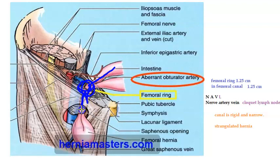The femoral hernia passes through the femoral ring, then through the femoral canal, and comes out through the saphenous opening in the fascia. That pathway explains why it is not that common.